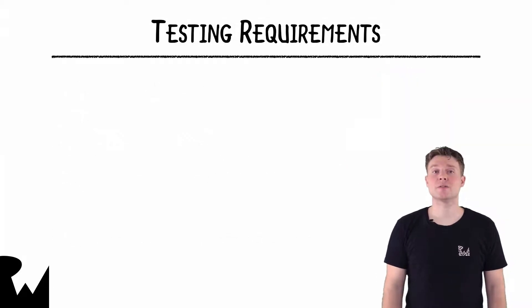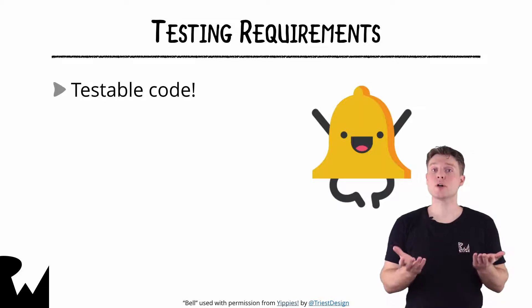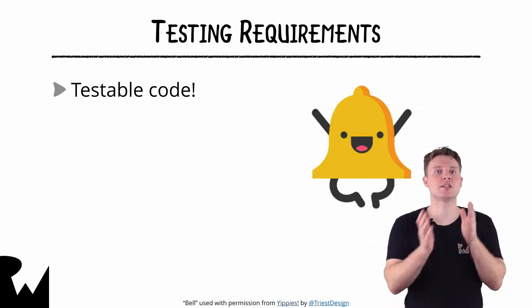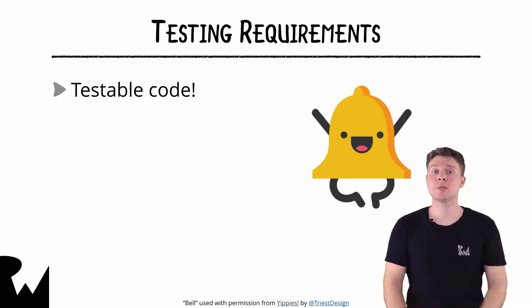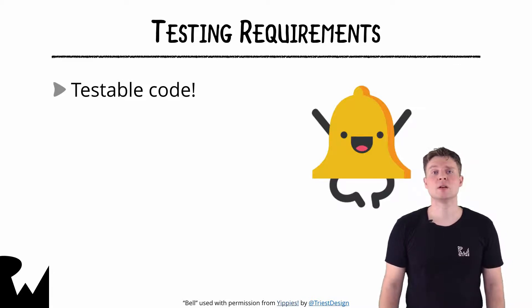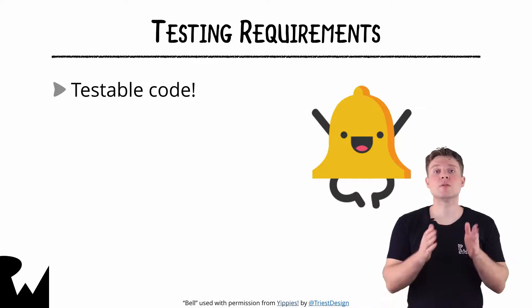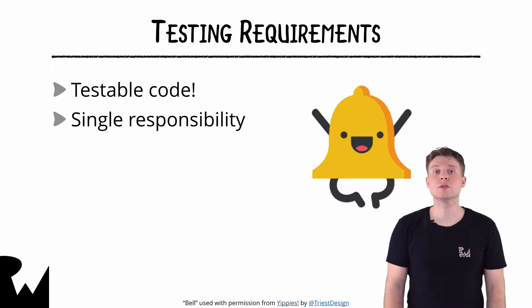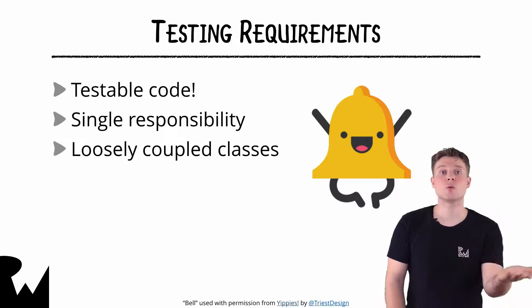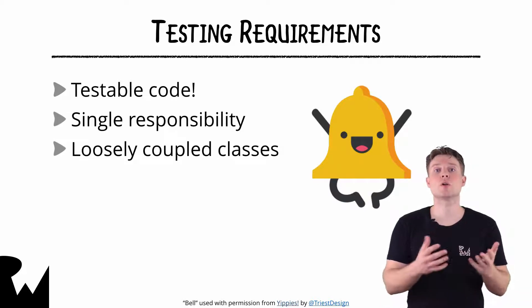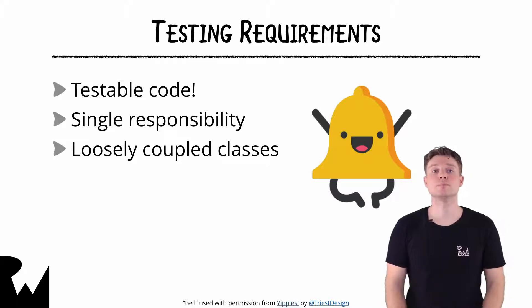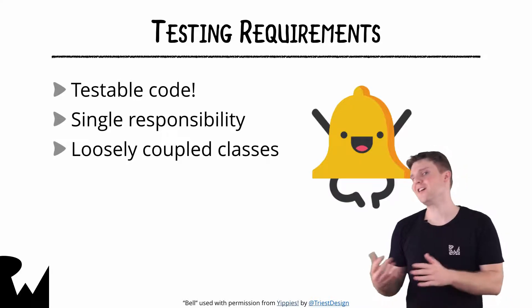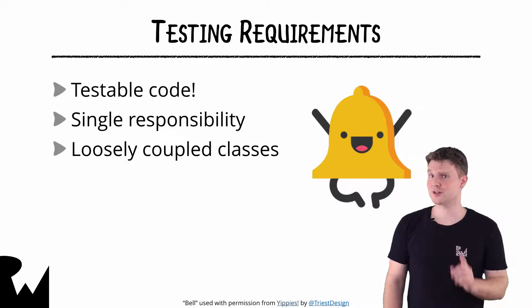In order to write tests effectively, there are a few requirements. Mainly, your code must be testable. For example, if you have a gigantic class that does everything and anything within your app, it's going to be difficult to write tests for it. It will also likely be difficult to make changes to this sort of code base. Instead, tests encourage the idea of single responsibility — each class should just focus on one thing. Tests also encourage loosely coupled classes. The easier it is to swap out a dependency, the easier it's going to be to test or even move away from that dependency in your code. This really helps when management decides they want to use that other vendor and expect you can make the switch in just one day.